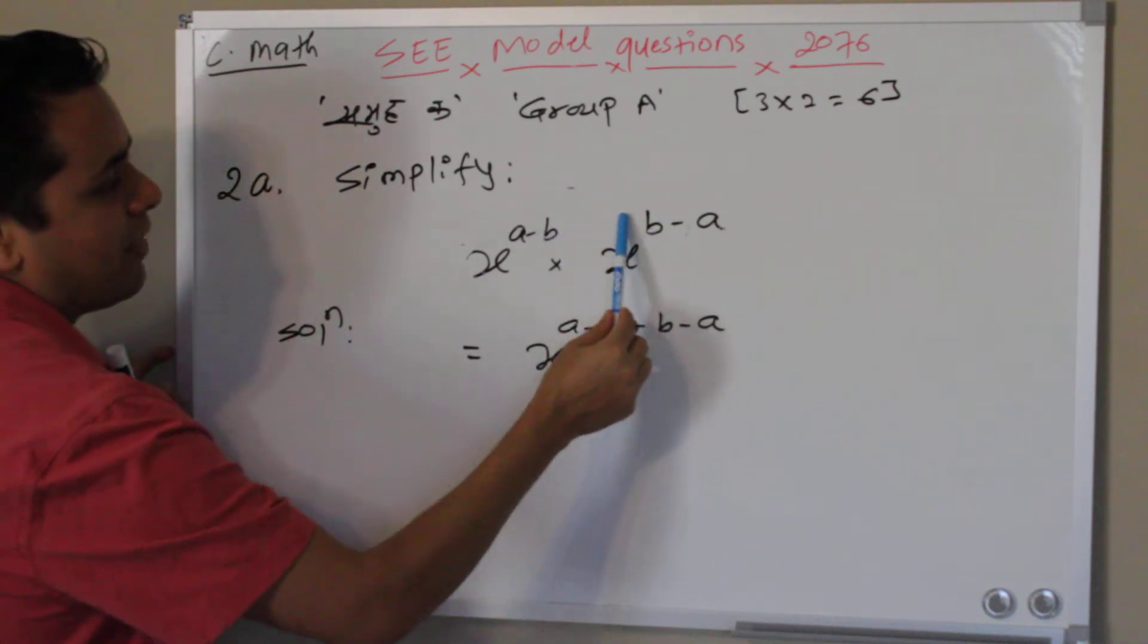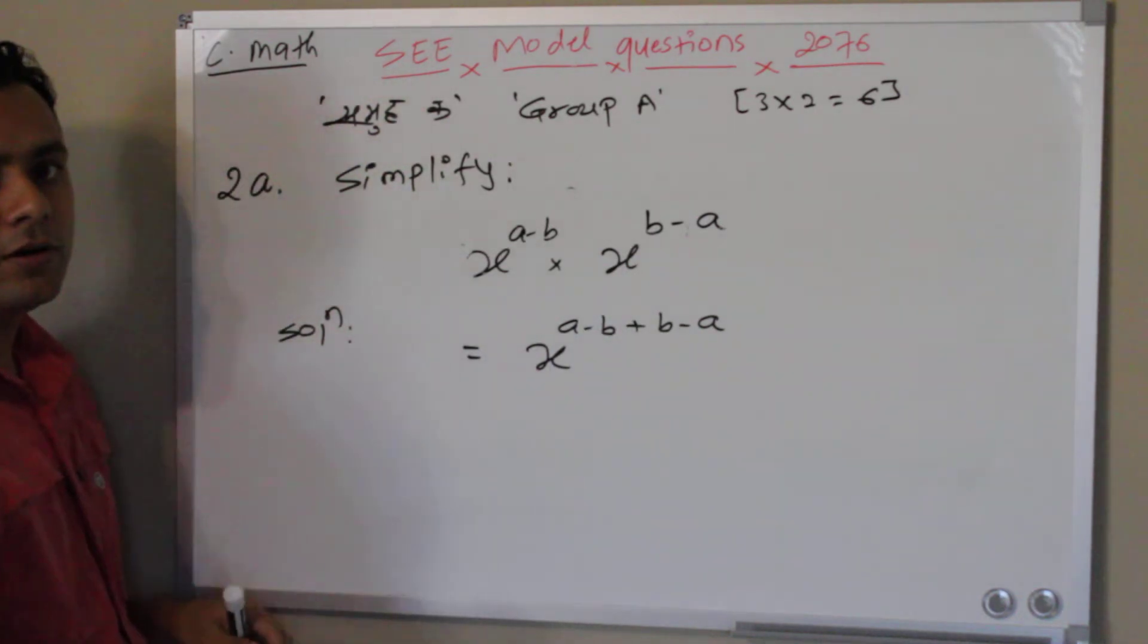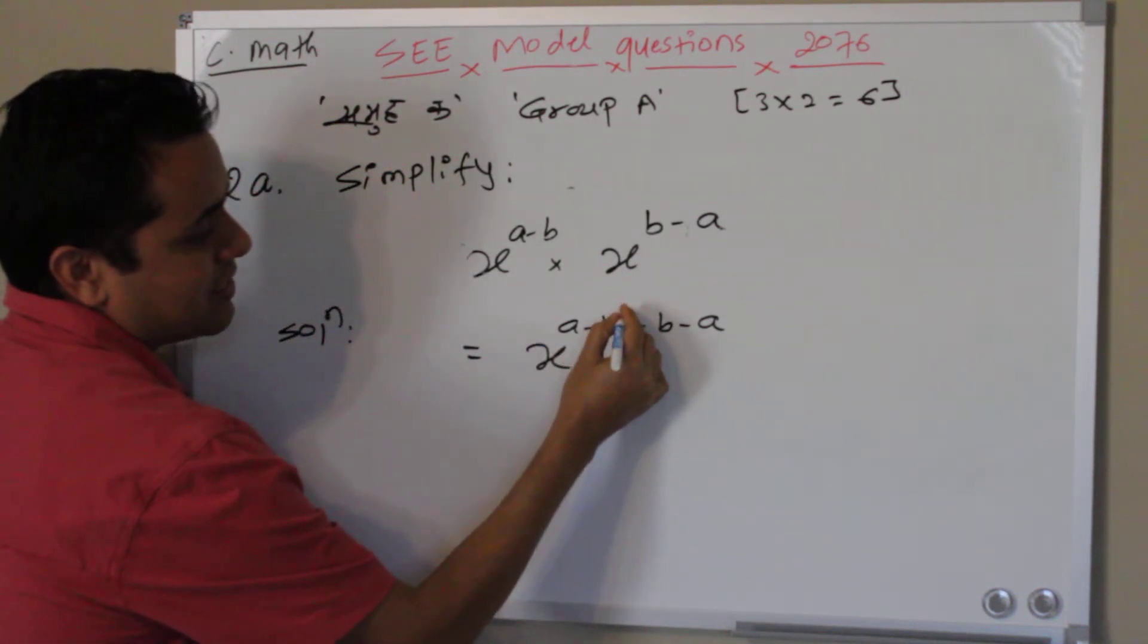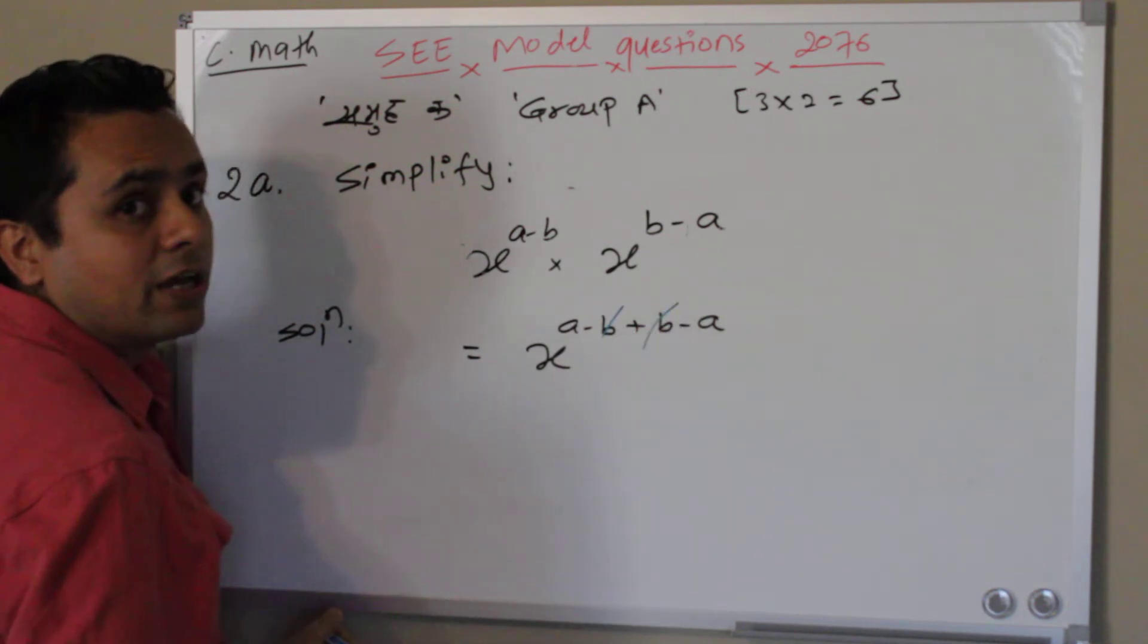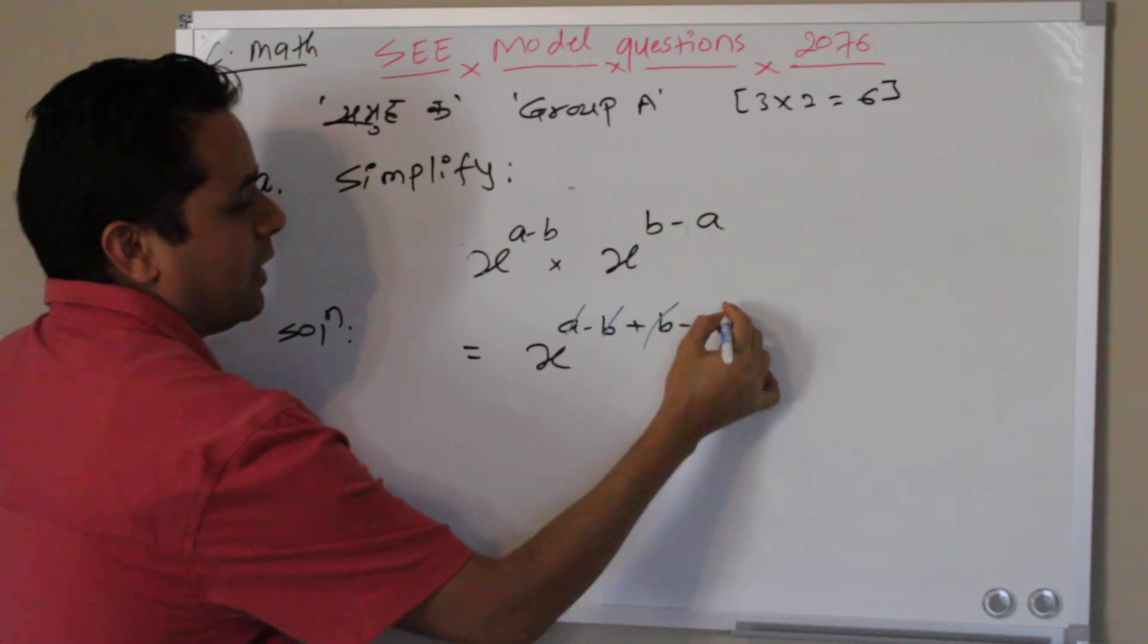a minus b plus b minus a. Cancel them out because this is negative b and positive b. You can cancel them out. So a and a cancel out.